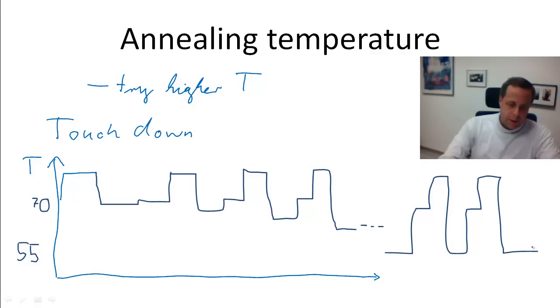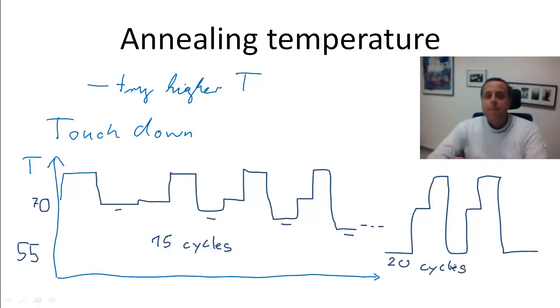So what you really do is you use some 15 cycles for the touchdown, as we call it. Now you realize why it's touchdown, right? It's touchdown because you lower the temperature for annealing each and every time. And after 15 cycles or so, you have reached a reasonably low temperature, and that will then you just keep going for another 20 cycles.